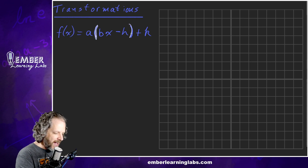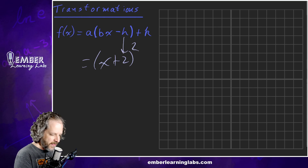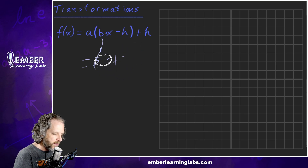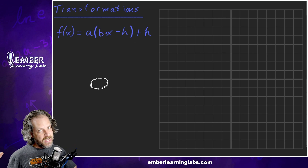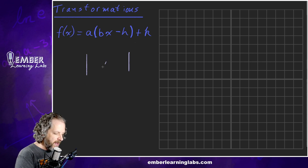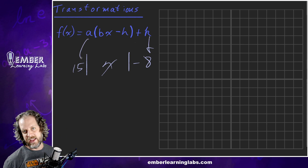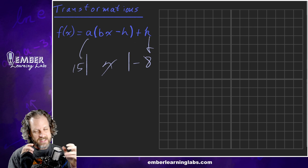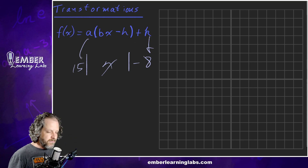You need to understand the idea that there is an inside the parentheses and an outside of the parentheses. For a quadratic, something inside might be like (x + 2) — so h would be that value. And then there's also a zone outside the parentheses. For an absolute value, if I had minus 8 outside, that would be one transformation; if I had plus 15 outside, that would be another. So there's inside the parentheses — which in this case means inside the absolute value bars or inside the squared expression — and there's outside.